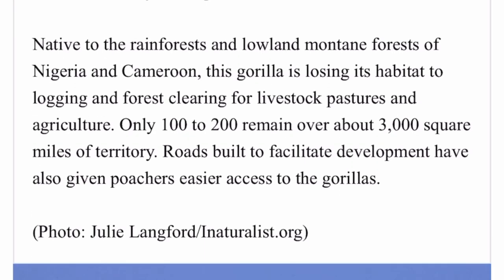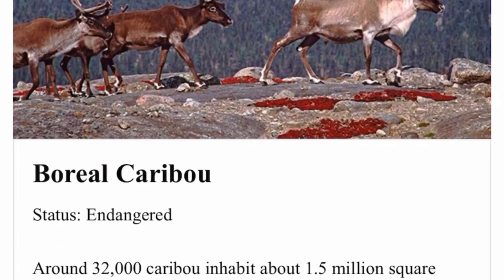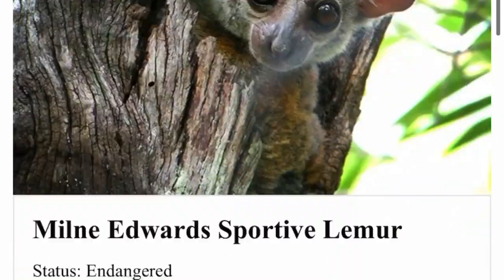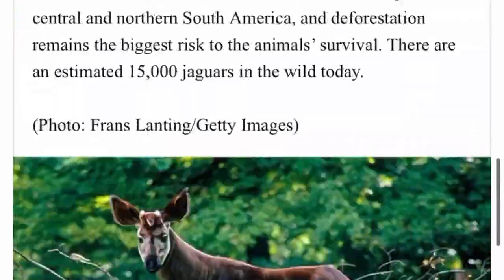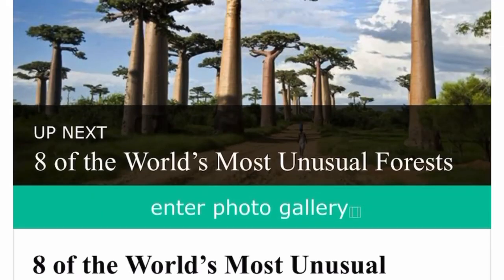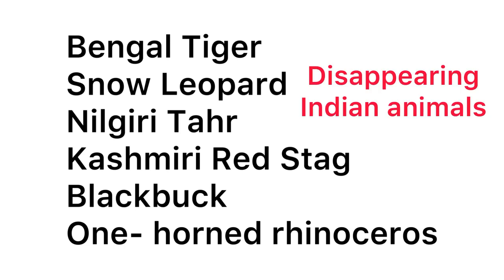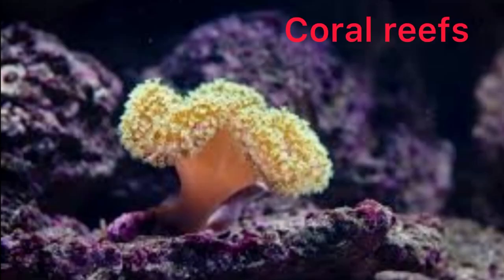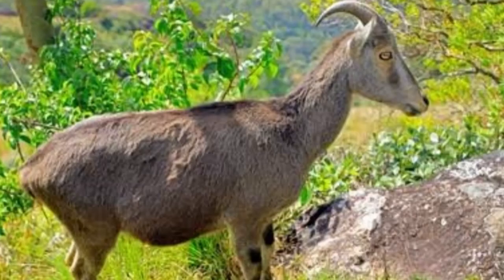So many animals are disappearing in the world. Here are some examples of endangered animals: Bengal tiger, snow leopard, Nilgiri tahr, Kashmiri red stag, black buck, one-horned rhinoceros, and coral reefs. All of you find out more animals that are on the list of endangered animals.